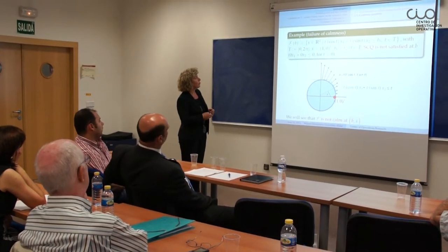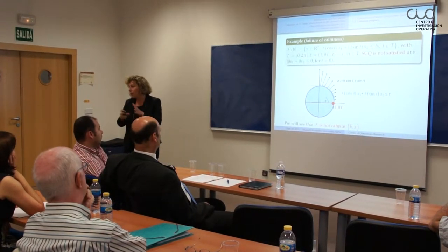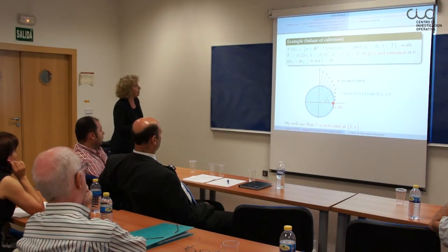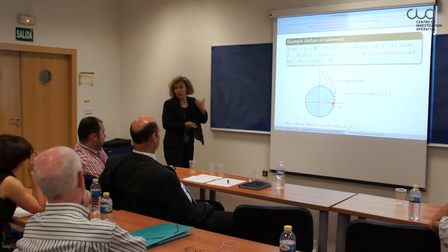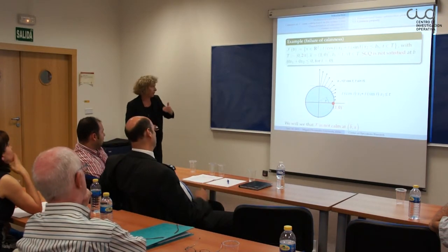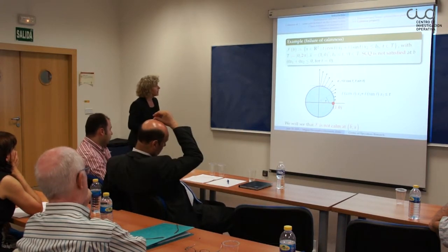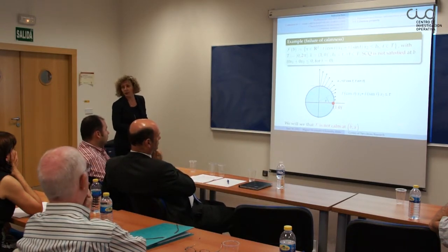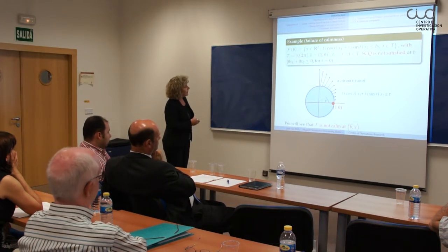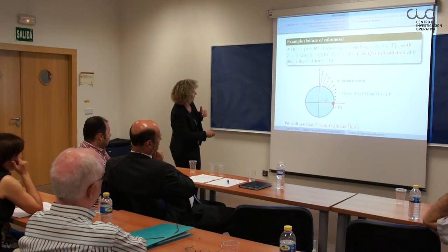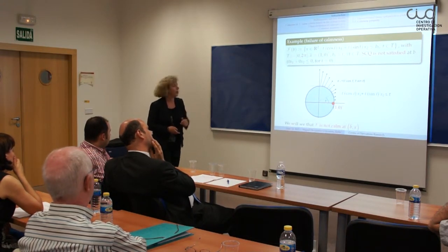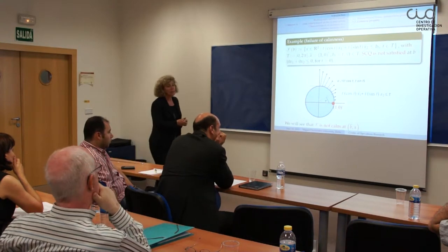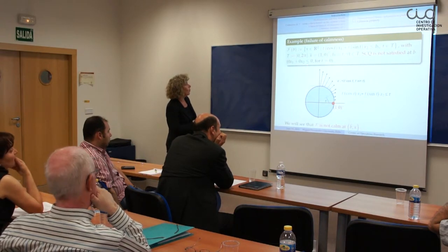In the second example, we have slightly modified each inequality by multiplying by t, and consider the same nominal element. This system is equivalent to the previous one — it has the same feasible set, and each inequality is equivalent. But now the calmness property fails at this point. The a_t's become smaller and smaller as the points approach the nominal element (1,0). The Slater constraint qualification is not satisfied in this example since when t = 0 we have the trivial inequality.